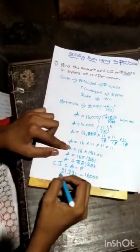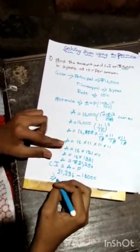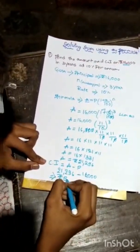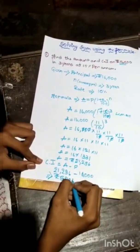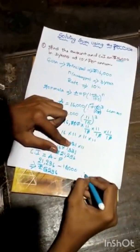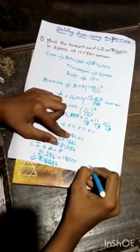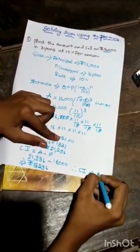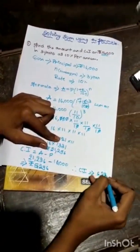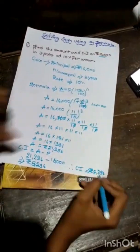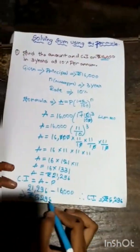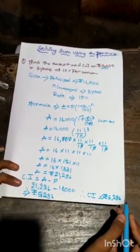Then if we subtract, we'll get the answer as rupees 5,296. Here, therefore, CI is 5,296. Rupees 5,296. So the CI is 5,296.